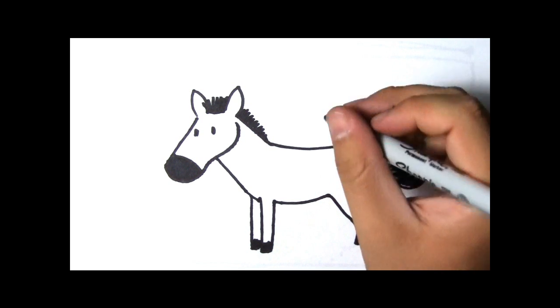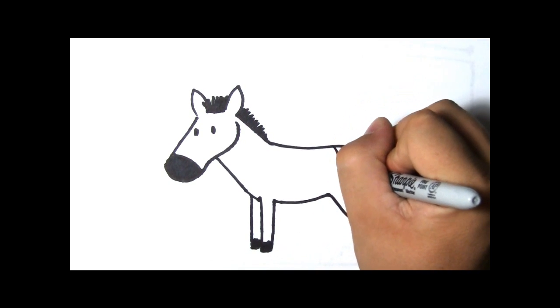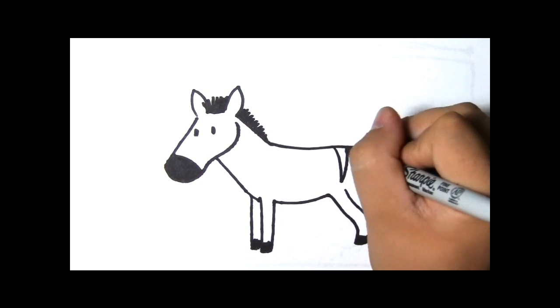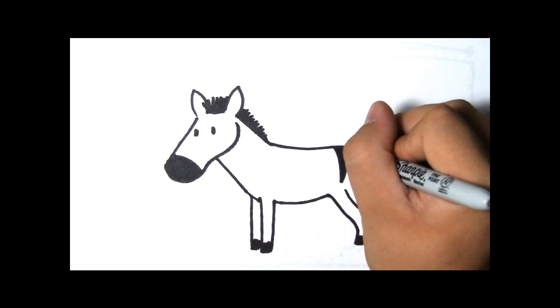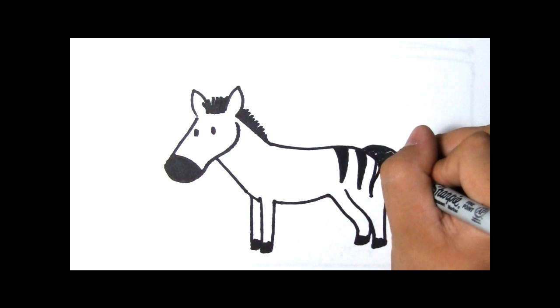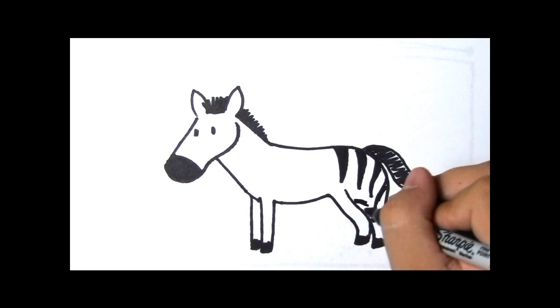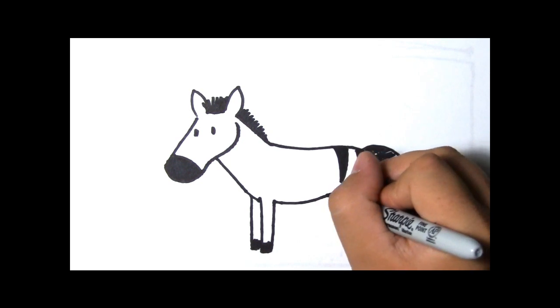I know, stripes. Zebras have stripes to keep them camouflaged. Camouflaged is when it's hard to see something because it blends in with its environment. Zebras have all sorts of stripes so you can be super creative.